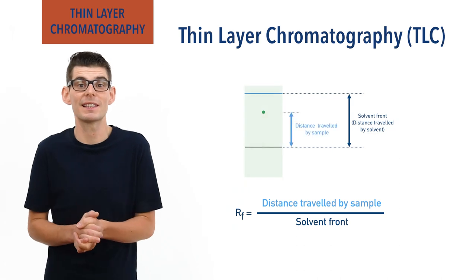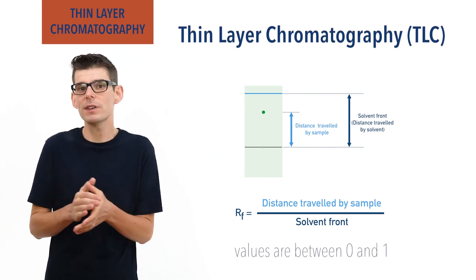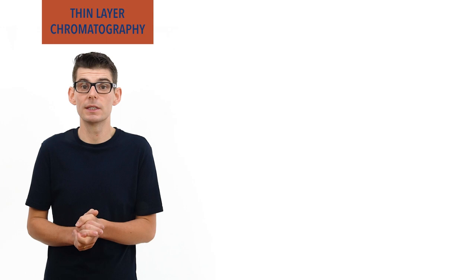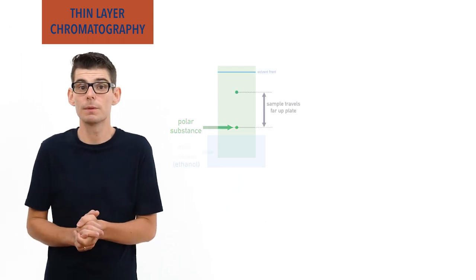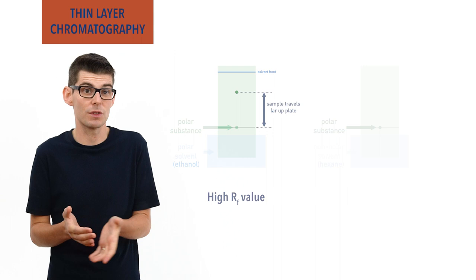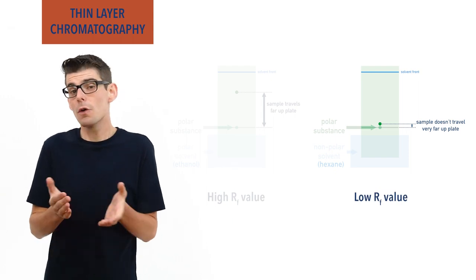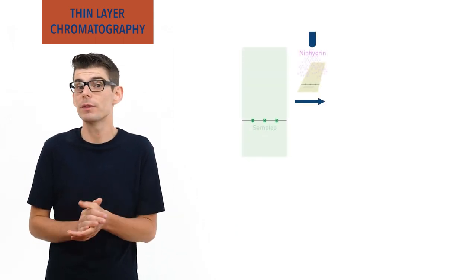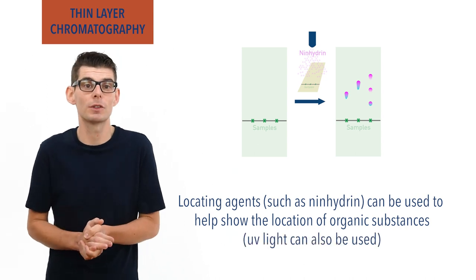RF values will always be between 0 and 1, and the greater the RF value, the greater the affinity the substance has for the mobile phase. Different solvents can be used depending on the substances being studied. For example, a highly polar substance would travel quickly up a plate if a polar solvent such as ethanol was used, giving a high RF value, but if a non-polar solvent such as hexane was used, the substance would barely move and have a very low RF value. For many organic molecules, locating agents or dyes such as ninhydrin are used to identify their positions on a TLC plate, and UV light can also be used as many organic molecules absorb UV light.